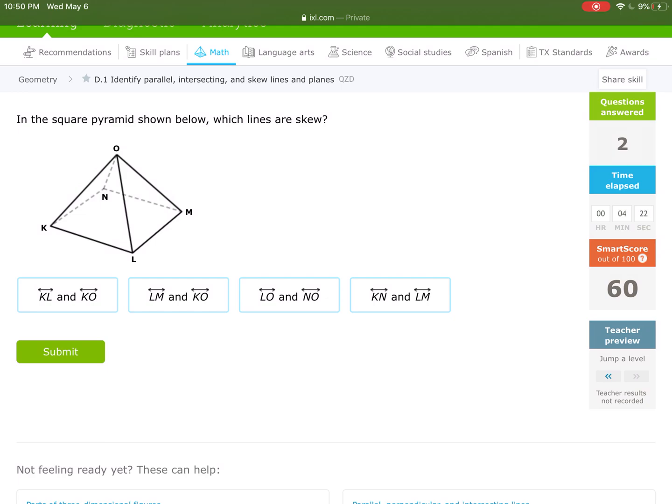In this square pyramid, which ones are skew? I'm going to go ahead and skip that one. Actually, I'm going to do it real quick. KL and KO, nope. LM and KO, yes.